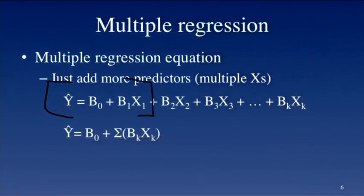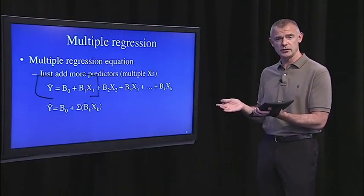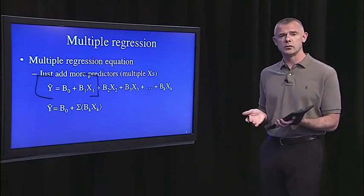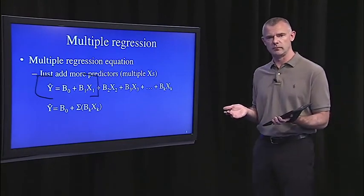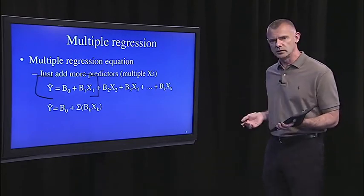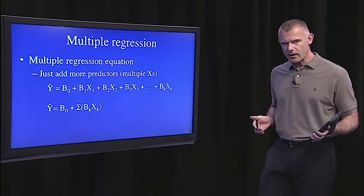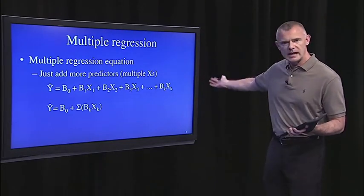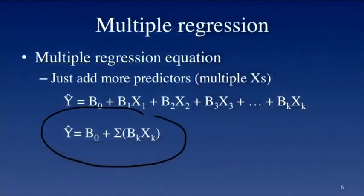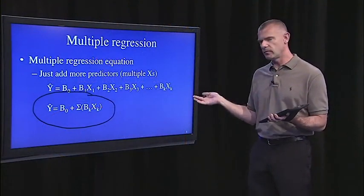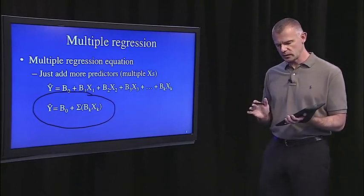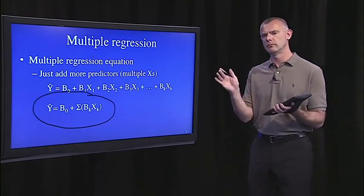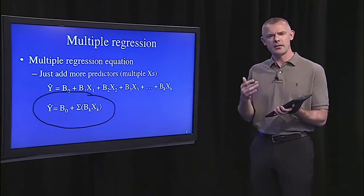In simple regression, the predicted score on Y was the regression constant, or the intercept, and the slope times an individual score on X. That's just the formula for a line: intercept plus slope. What we're doing now is adding in as many predictors as we like — I can extend this out to K predictors. In the multiple regression equation, we still have an intercept — the predicted score on Y when the X's are zero — and then we can have multiple predictors and multiple regression coefficients.